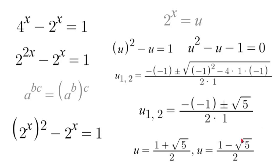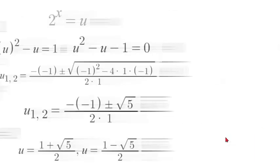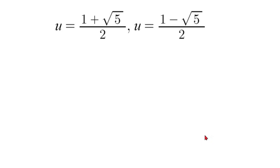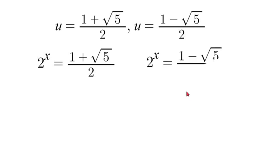So let's get a clean slide here. Now that we have our two u values we are going to substitute back in our 2 to the power of x for u. So we have 2 to the power of x is equal to 1 plus square root of 5 over 2 and 2 to the power of x is equal to 1 minus square root of 5 over 2.